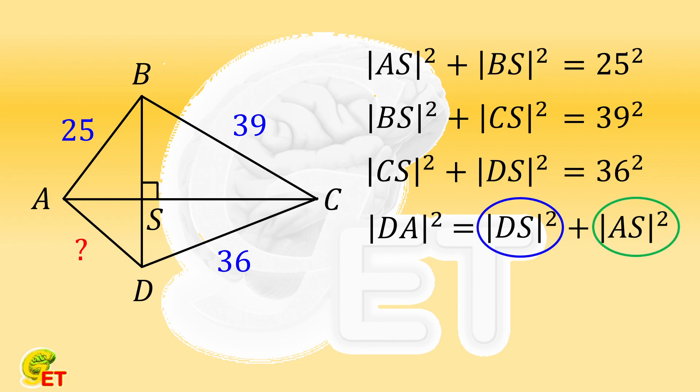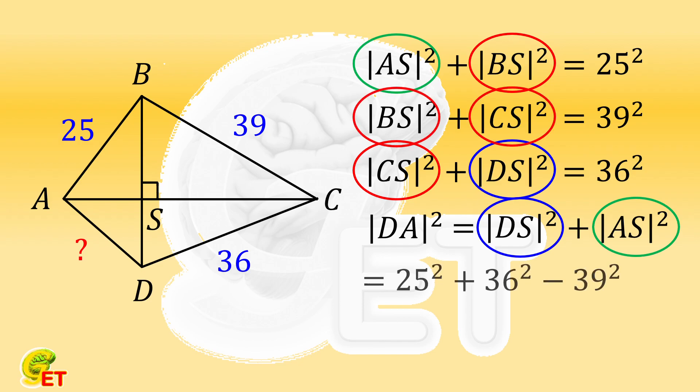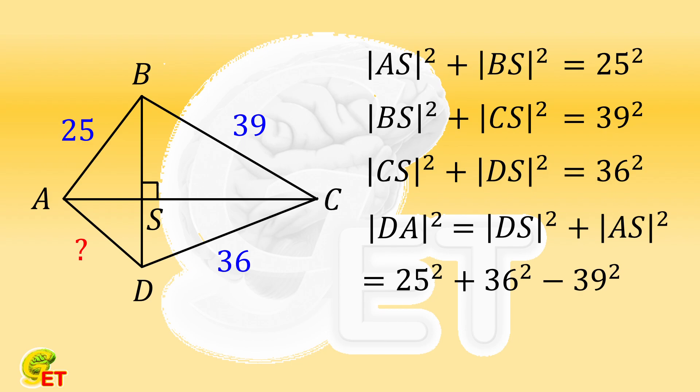What is it? It is equal to the first formula plus the third formula minus the second formula. That is, the square of 25 plus the square of 36 minus the square of 39.